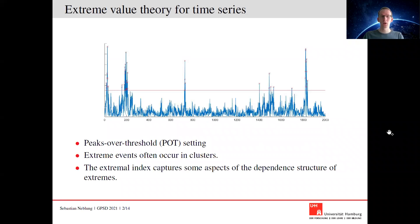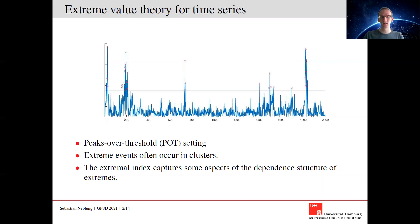Throughout this talk I want to consider extreme value statistics for time series. If we observe a time series as in this picture here, we consider all observations as extreme which are above the threshold — the red line here — the so-called peak over threshold setting. The typical behavior observable in this picture is that extremes don't occur singularly but in clusters. There are groups of extreme observations and longer periods without any extremes, and there are some parameters which can capture the dependent structure of these extremes, for example the extremal index.